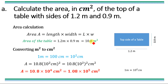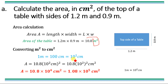We have calculated the area, but this area is in meter square. Now we will convert meter square into centimeter square because the question requires the area in centimeter square. We know that 1 meter is equal to 100 centimeters, or in scientific notation, 10 power 2 centimeters.